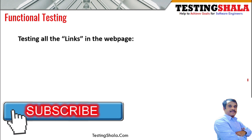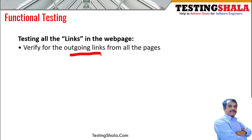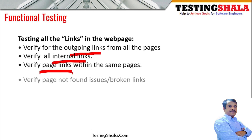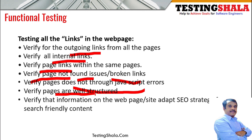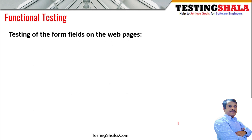In functional testing, we test all kinds of links on a given web page. We verify all outgoing links to ensure they navigate to the right address. We also test internal links and links within the same page. We should verify page-not-found issues or broken link issues, check for JavaScript errors, and ensure each page is adaptable for search engine optimization.